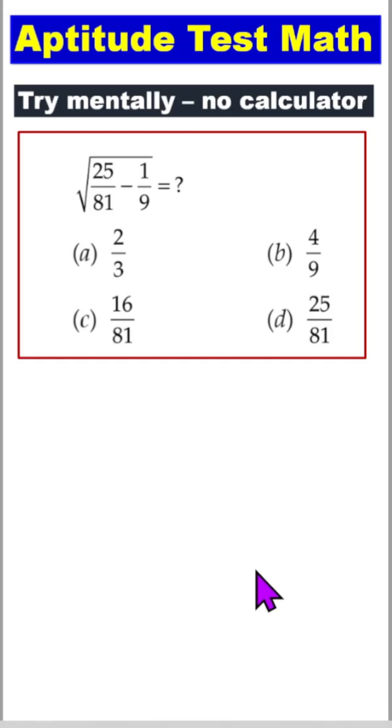No calculator. Try mentally. Here is inside root 25 divided by 81 minus 1 by 9. We will find out the value, but we can't use a calculator.